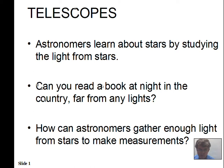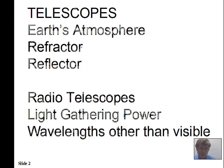In other videos we'll discuss calculations to compare telescopes, and the Earth's atmosphere regarding blue sky and space telescopes. The two basic types of telescopes are refractors and reflectors. Refractors use lenses to gather light; reflectors use a mirror. We'll also cover radio telescopes, light-gathering power, infrared, and X-ray results.